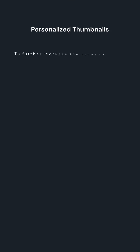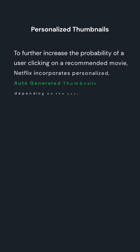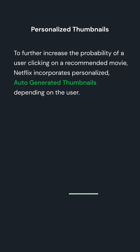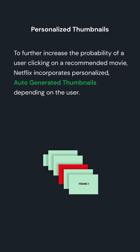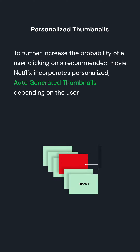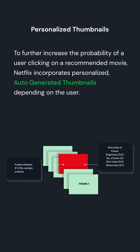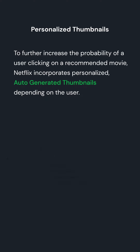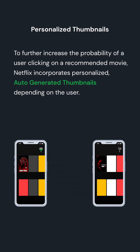To further increase the probability of a user clicking on a recommended movie, Netflix incorporates personalized auto-generated thumbnails depending on the user. So two users will see two different thumbnails on the same movie.